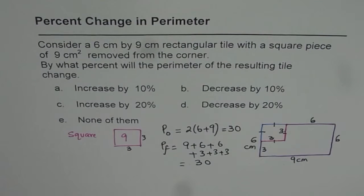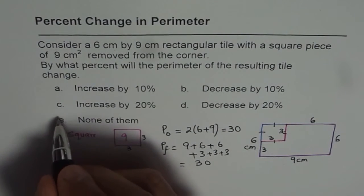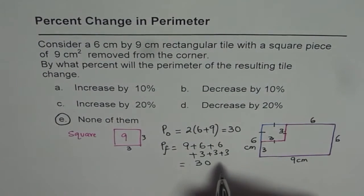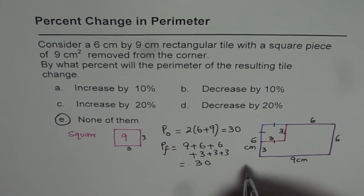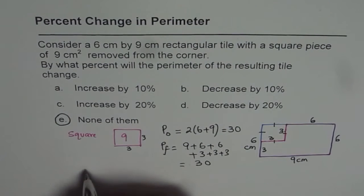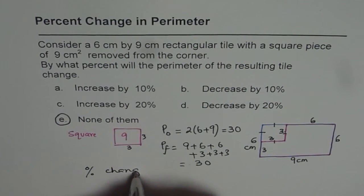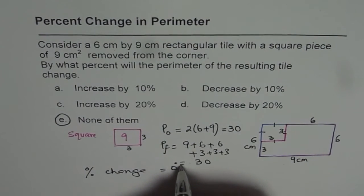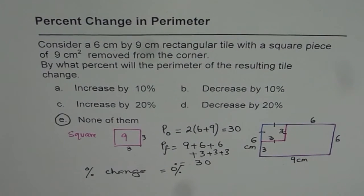So there is no change in perimeter at all. So the answer is none of them. E. So percent change is 0%, right? So percent change equals to 0%. Do you see that? It remains exactly same. Thank you.